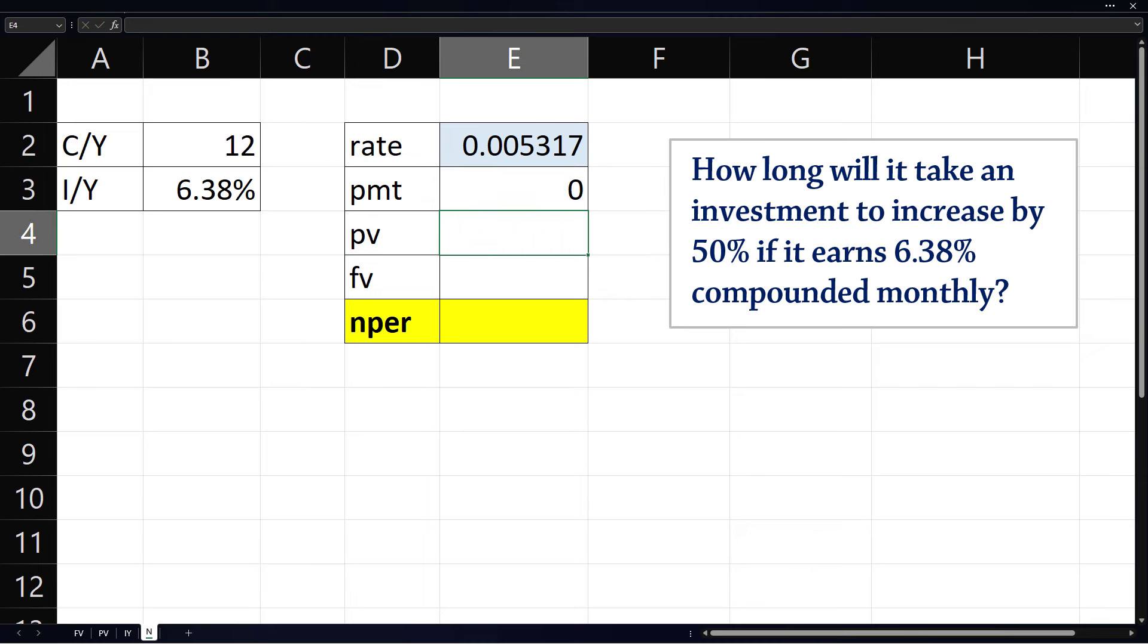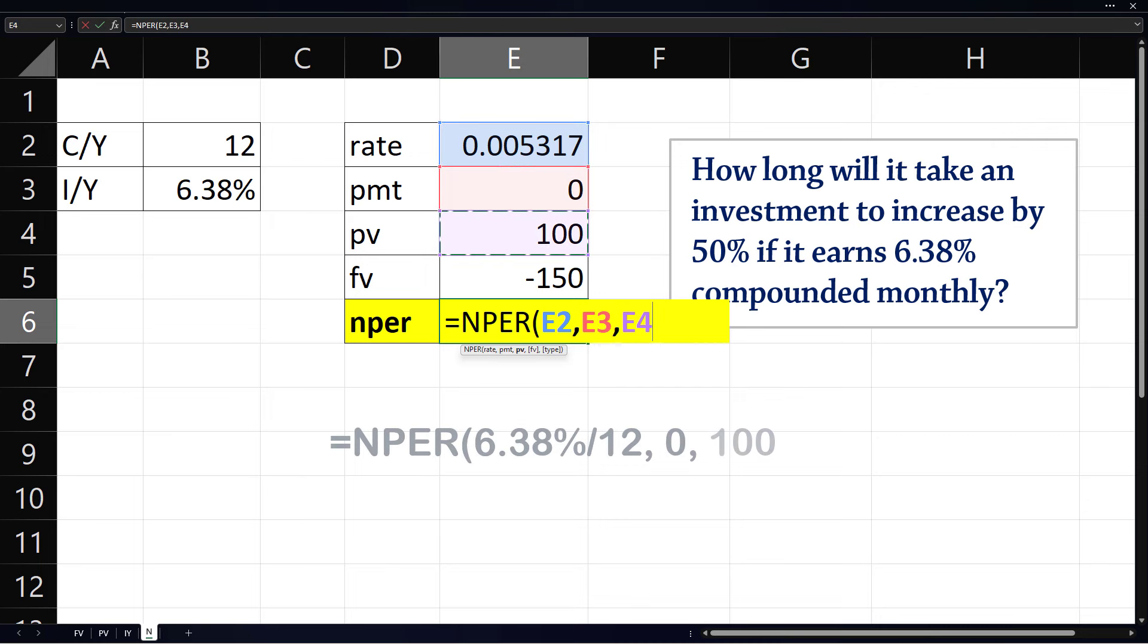Now we want the investment to increase by 50%. So if we choose a present value of, say, 100, you can choose any starting point you want. Then a 50% increase will result in a future value of 150, which we enter as a negative number since the present value is entered as positive. For the number of periods, we use equals NPER, rate, payment, present value, and future value. Enter.